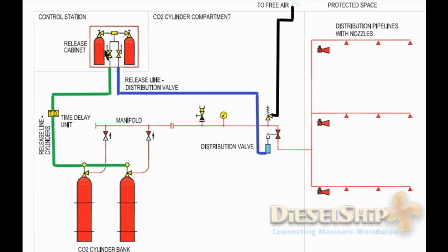The release cabinet has two pilot cylinders and is enclosed inside a cabinet with a door. Once the door is opened, it gives audible and visual alarms, and it may also trip ventilation fans and stop some fuel pumps — this varies by ship. But it must definitely give an audible and visual alarm and must stop the ventilation fans.